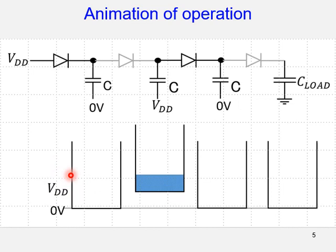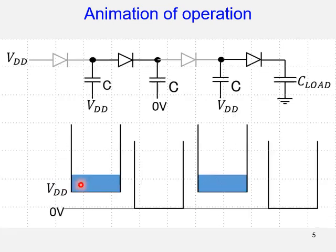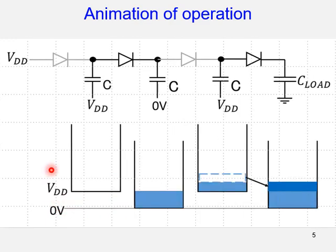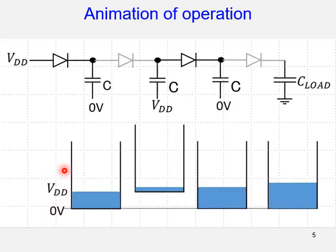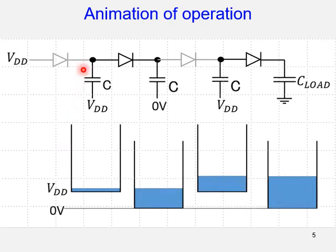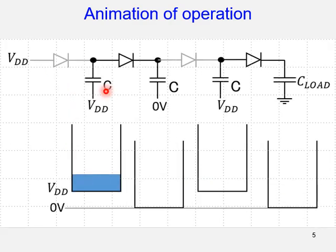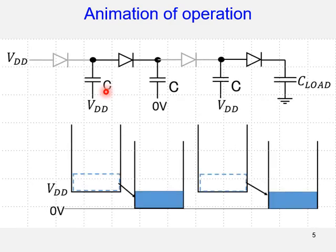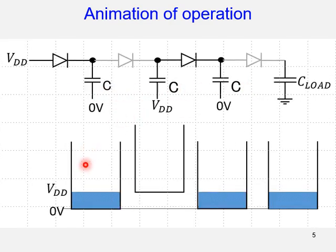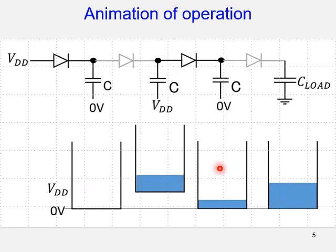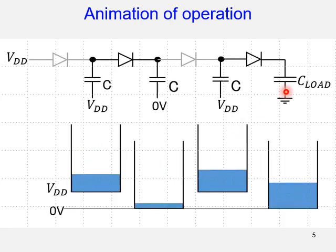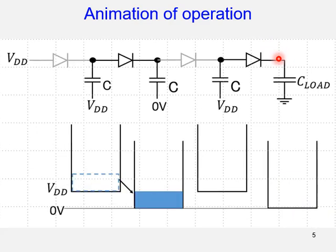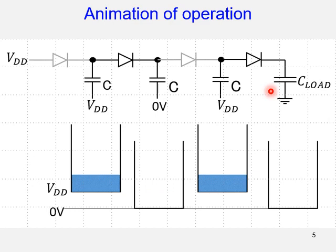The surface of the water from this baseline is considered the potential voltage at the top plate node of each capacitor. So now you have three capacitors, and so you have three glasses like this. Also, the output terminal is connected with the large load capacitor.